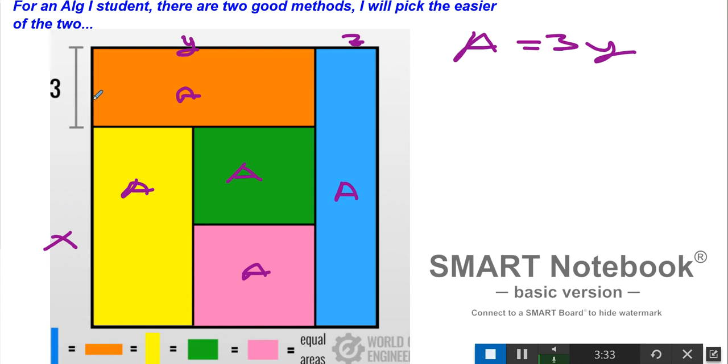We have x plus 3 times y equals this big rectangle right here—the orange, the yellow, the green, and the pink. So we're going to write 4A, because it's one, two, three, four A's, equals x plus 3 times y.